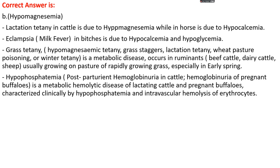Hypophosphatemia is a metabolic hemolytic disease of lactating cattle and pregnant buffalo. We can see post-parturient hemoglobinuria in cattle and hemoglobinuria in pregnant buffalo. Clinically, we find hypophosphatemia — a low level of phosphorus in the blood — and we can also see intravascular hemolysis of erythrocytes.